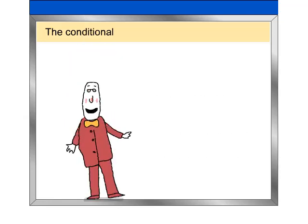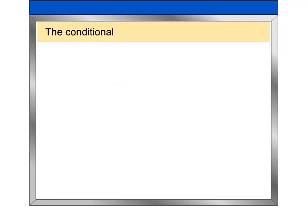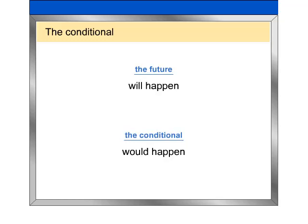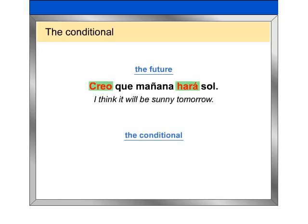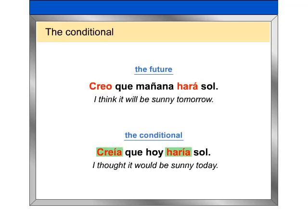In Spanish, as in English, the conditional expresses the future in relation to a past action or state of being. In other words, the future indicates what will happen, whereas the conditional indicates what would happen. For example: Creo que mañana hará sol. Creía que hoy haría sol.